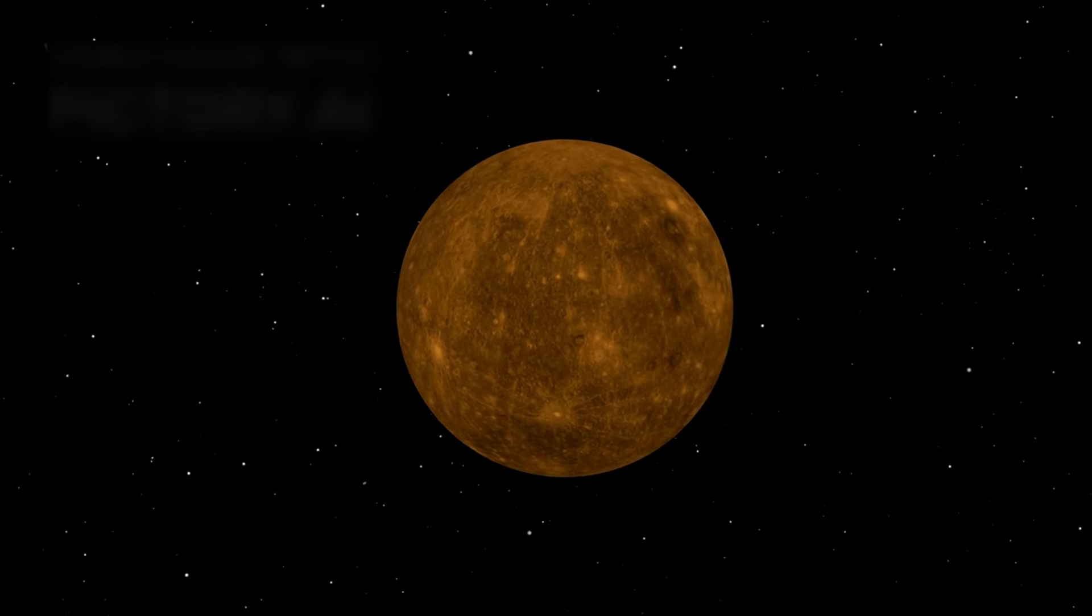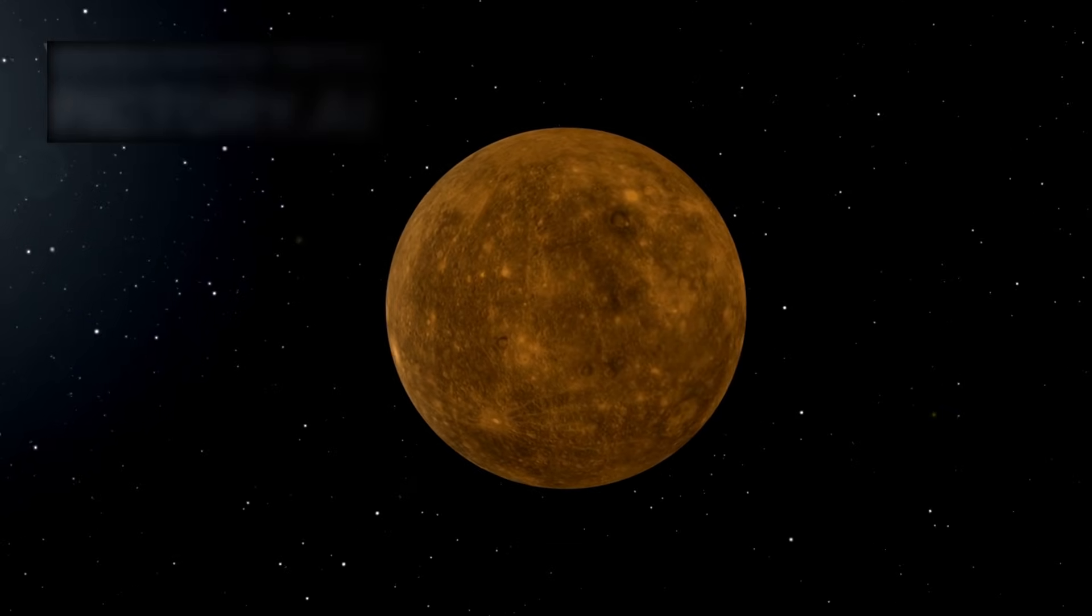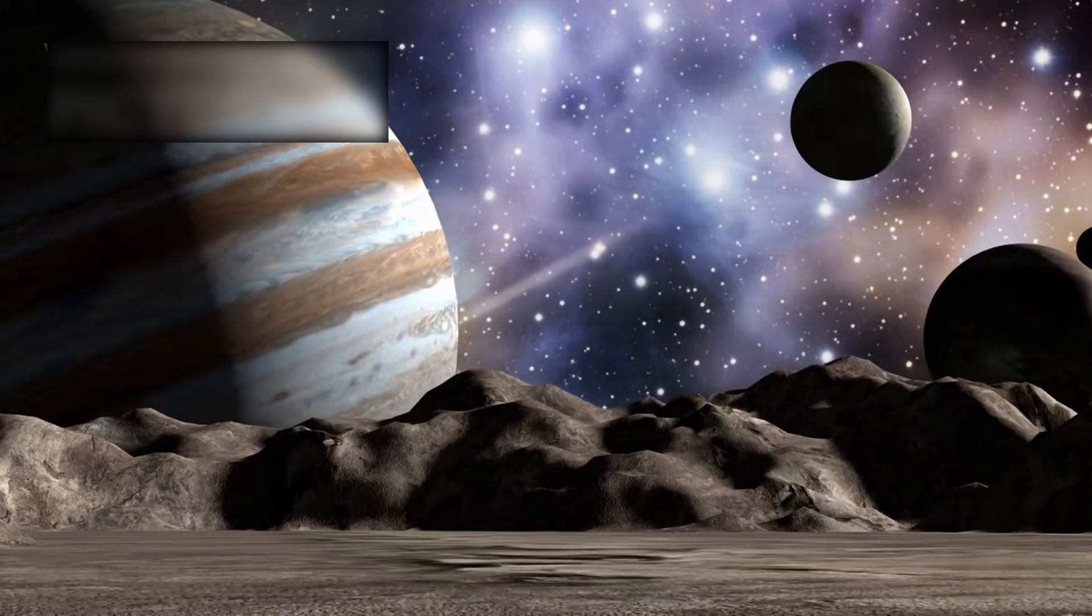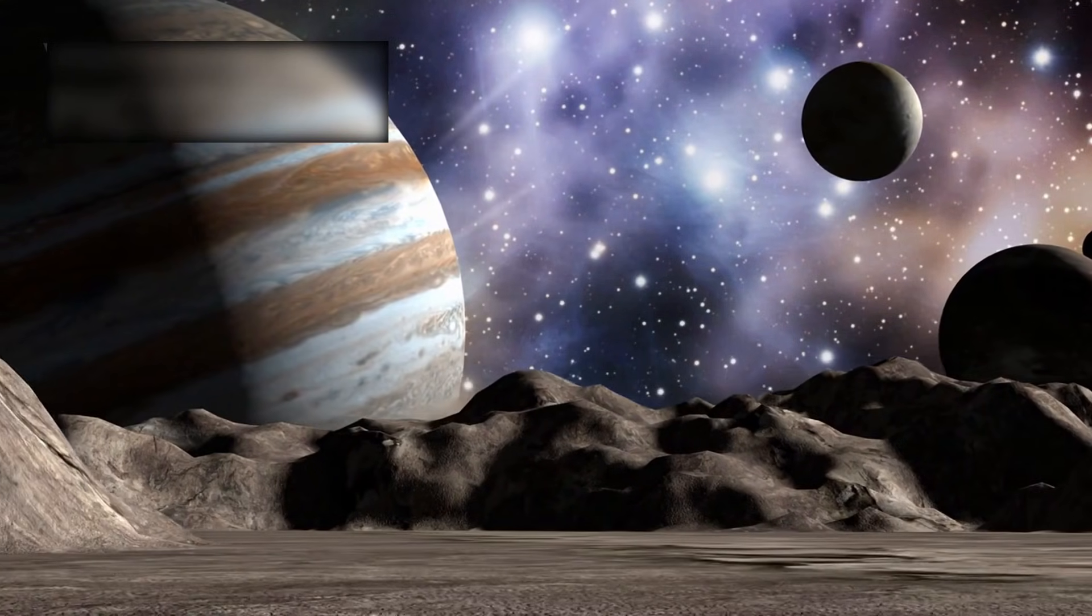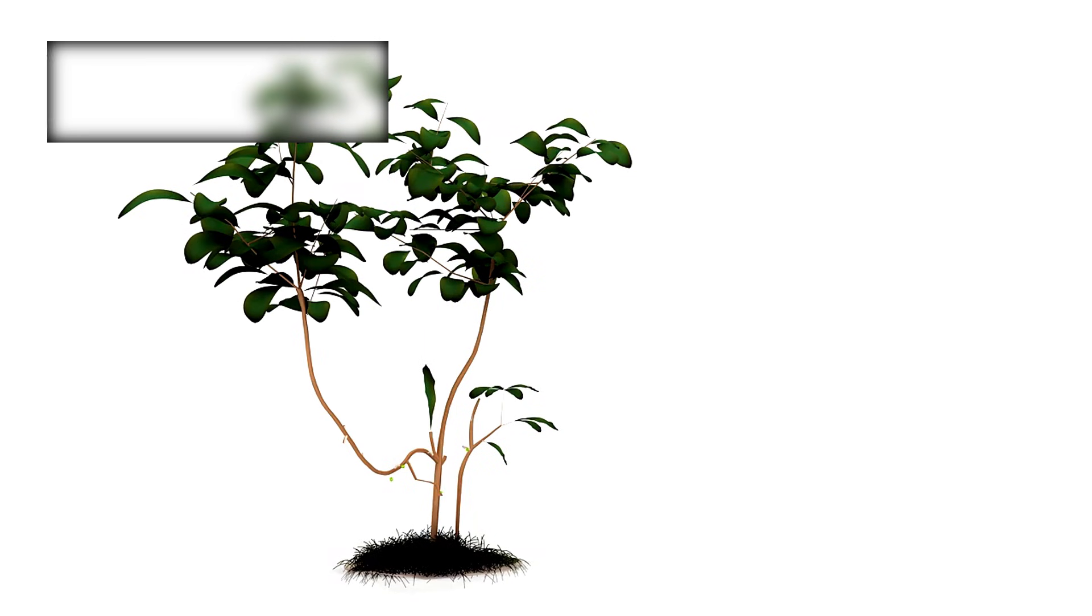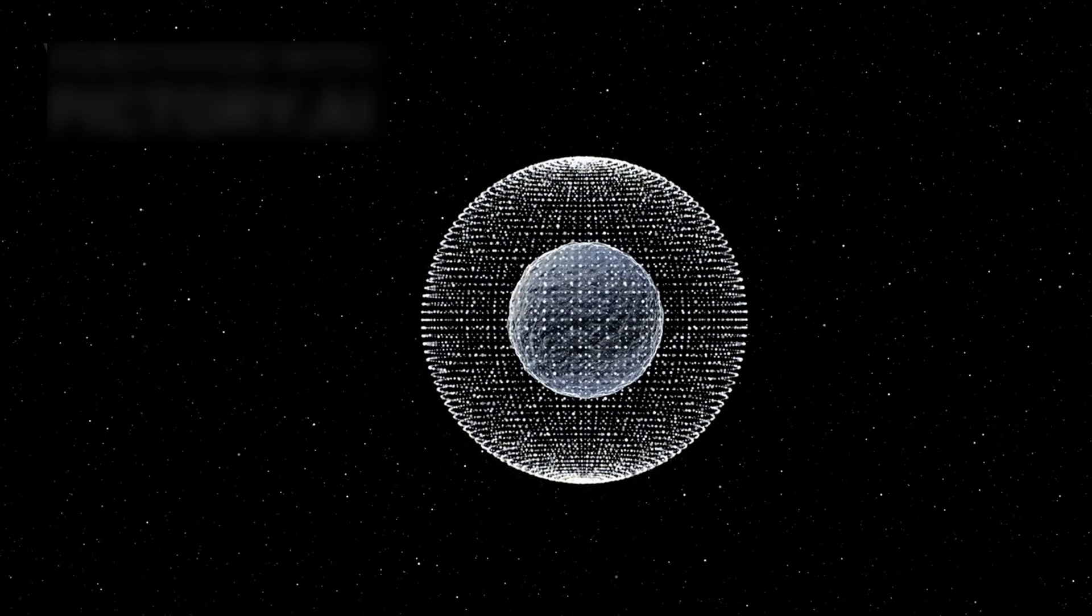K218b orbits a red dwarf star at a distance of just 0.18 astronomical units, closer to its star than Mercury is to our Sun. Yet, unlike Mercury, it isn't a scorched wasteland. Red dwarfs are smaller, dimmer, and cooler than our Sun, allowing K218b to reside within the habitable zone, the so-called Goldilocks region, where conditions might be just right for liquid water to exist on the surface or beneath the clouds.